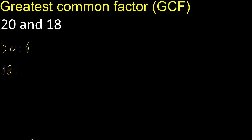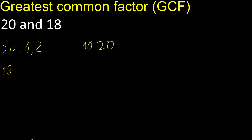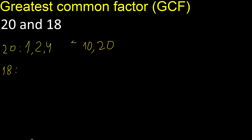Factors always start with 1. 20 divided by 1 is 20. Next, 20 divided by 2 is 10. Next, 20 cannot be divided by 3. 20 divided by 4 is 5. Next, 5 — 5 is already here.